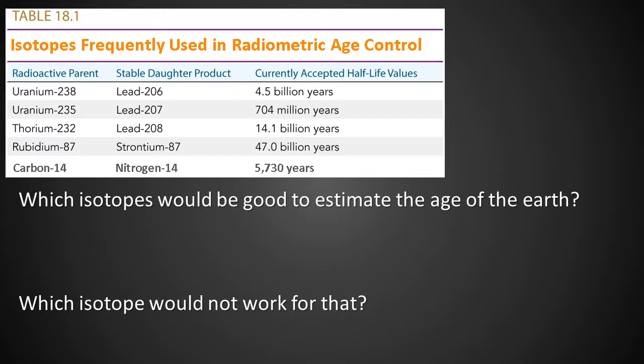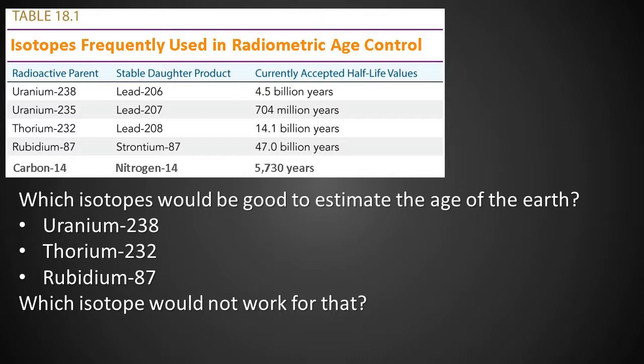This table lists some radioactive isotopes used for determining the age of geologic units and processes. Which isotopes would be good to estimate the age of the Earth? That's right — uranium, thorium, and rubidium all have long half-lives. Which isotope would not work for that? That's right — carbon-14. Its half-life is so short that all of the carbon-14 that may have existed when the Earth was formed would have decayed by now.